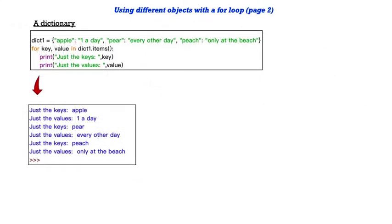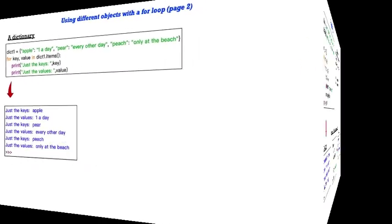And here's a for loop with a dictionary. So we have dict1, apple is the key, one a day is a value, pear key, every other day value, peach key, only at the beach value. So for key and value in dict1.items, that's a convention. You'll see that key value or KV. K for the key, V for the value in dict1. And then we print just the keys, comma, key, the key iterable, and same thing for the values. And you see what gets printed out. Just the keys are all three keys, and just the values are all three values.